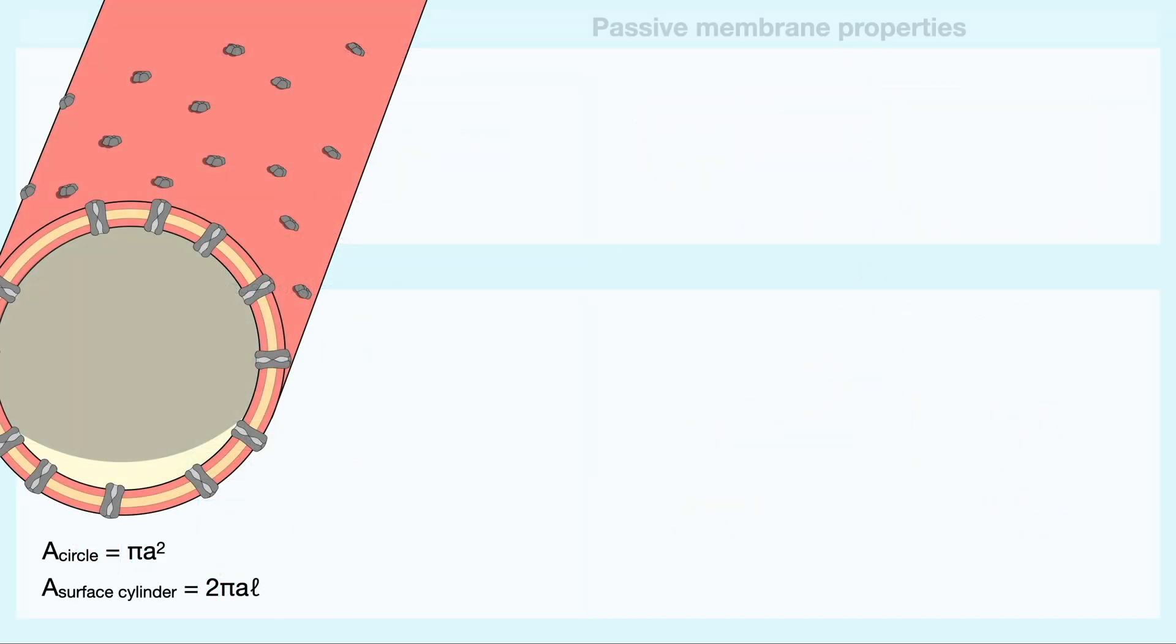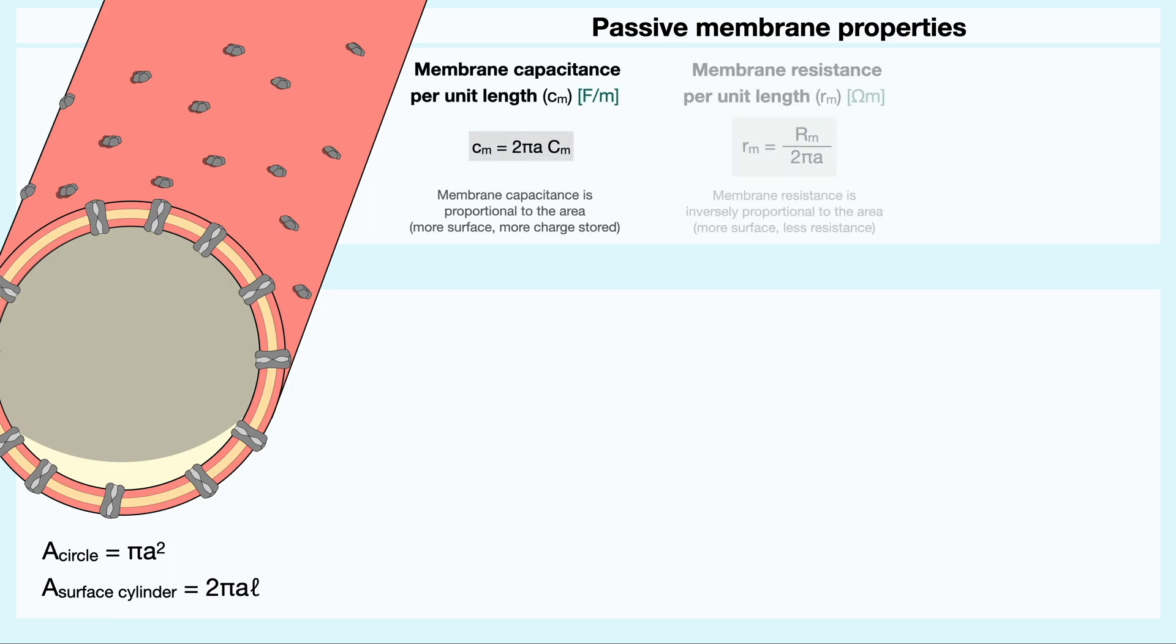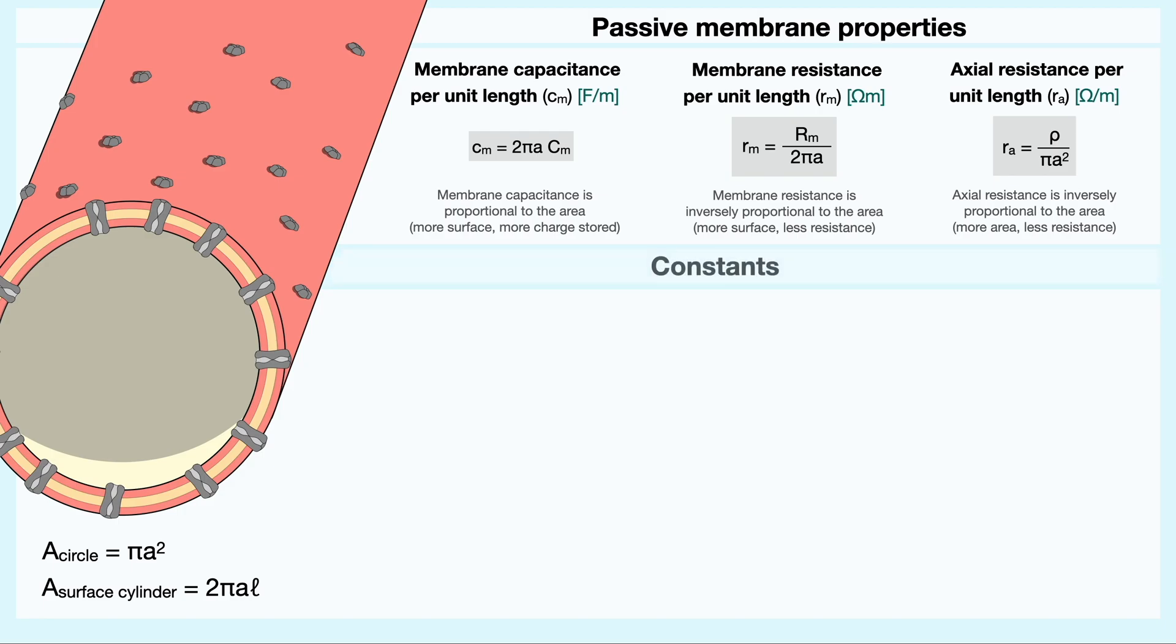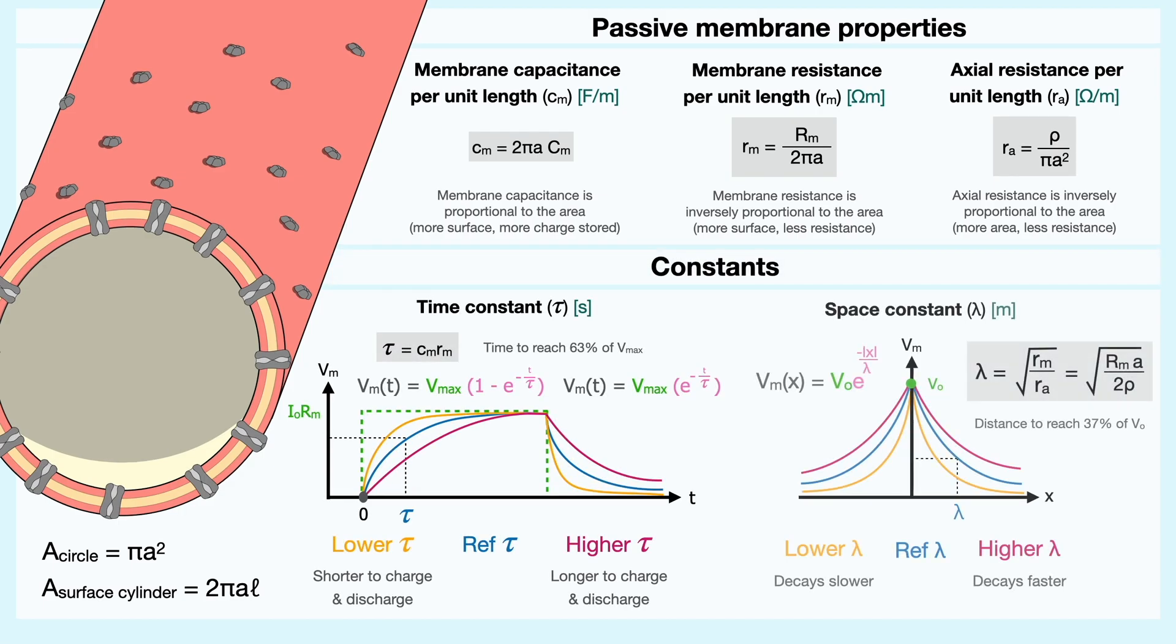With this being said, we have now covered the three passive membrane properties, the membrane capacitance, the membrane resistance, and the axial resistance as well as the two constants, the time constant tau and the space constant lambda. In summary, these properties affect how the magnitude of the membrane potential changes as a function of both time and distance.